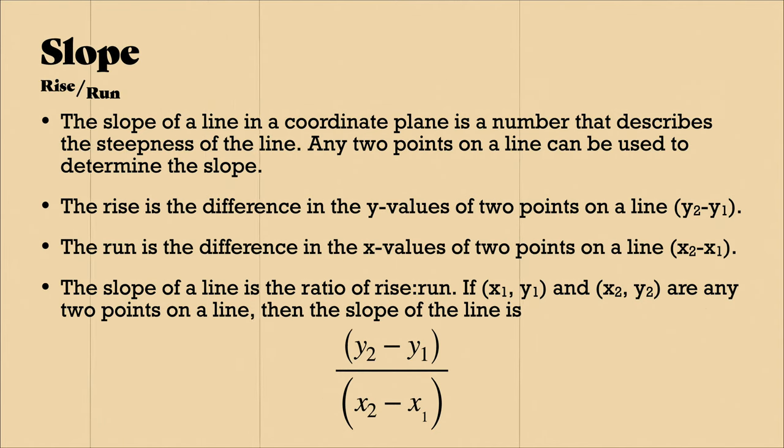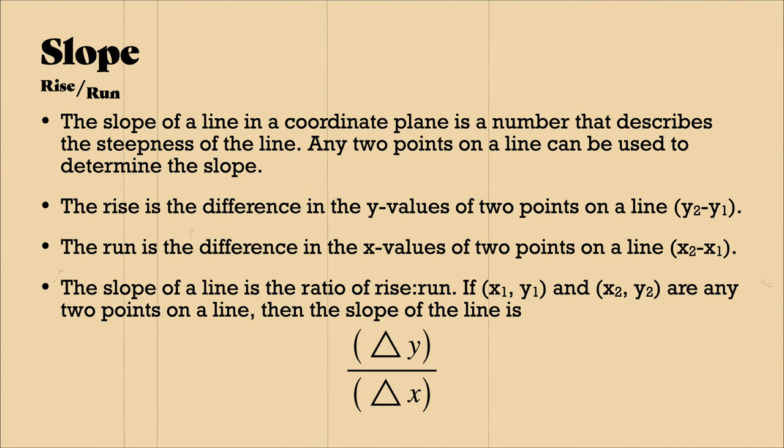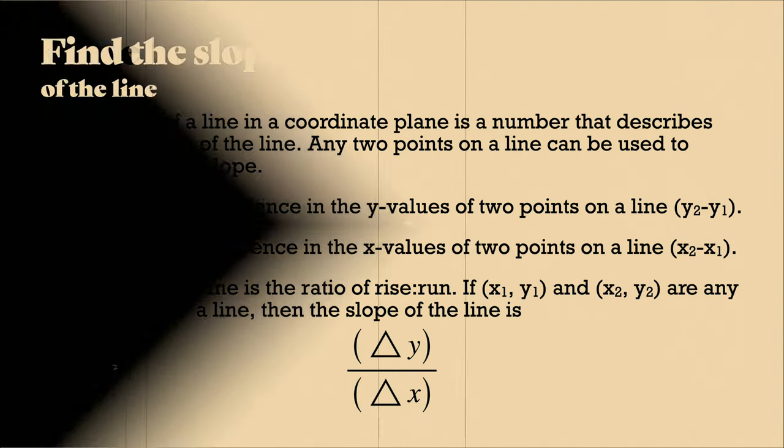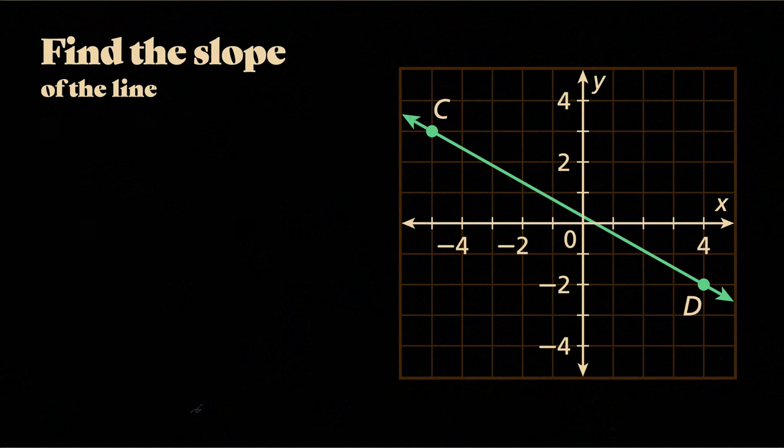Now instead of saying y2 minus y1 and x2 minus x1, I could have also said change in y over change in x. So let's find the slope of this line.